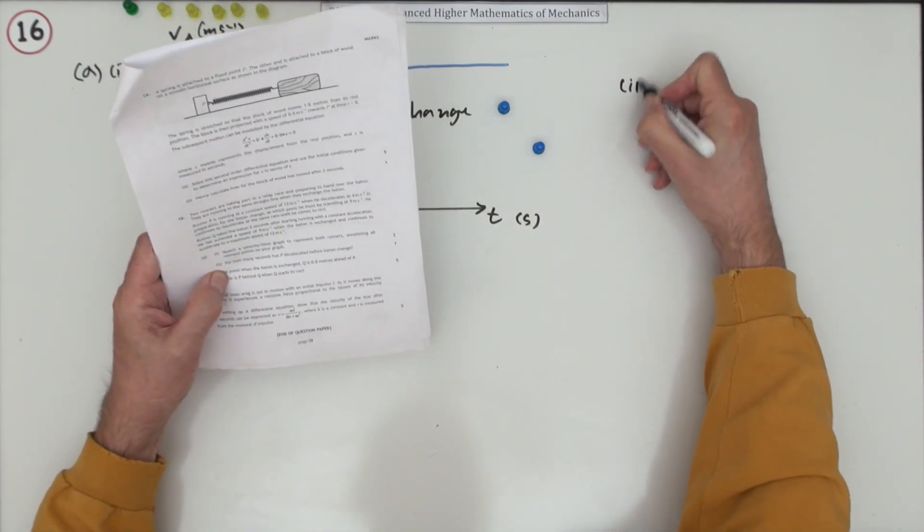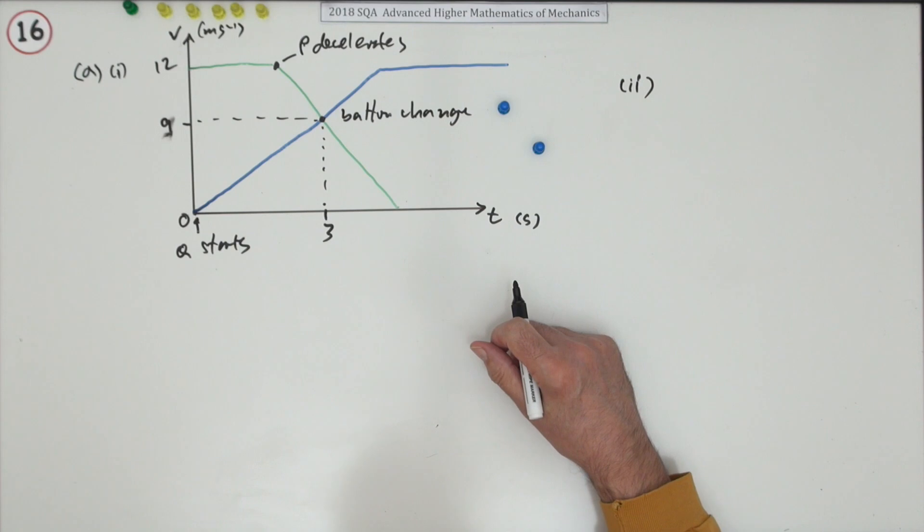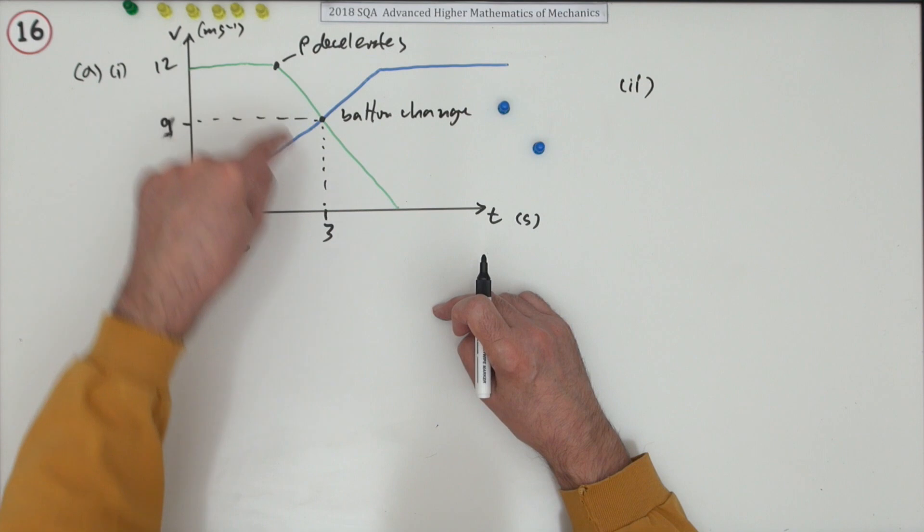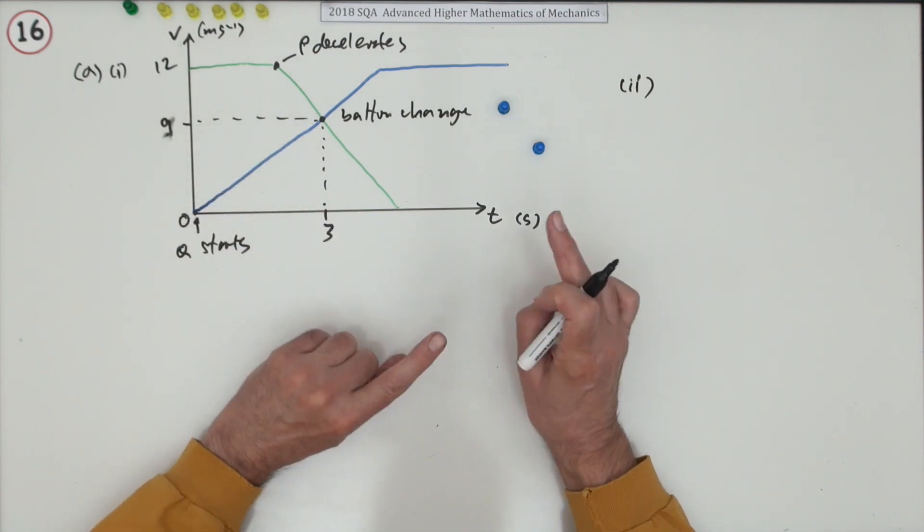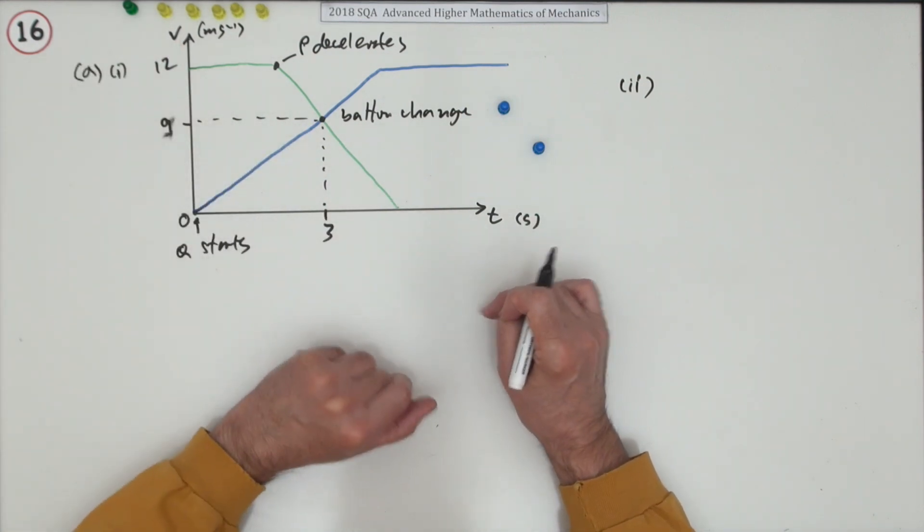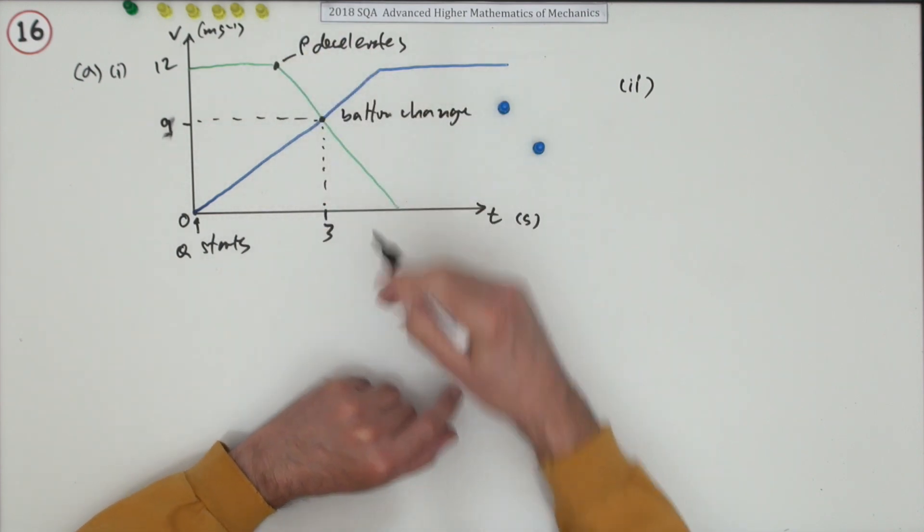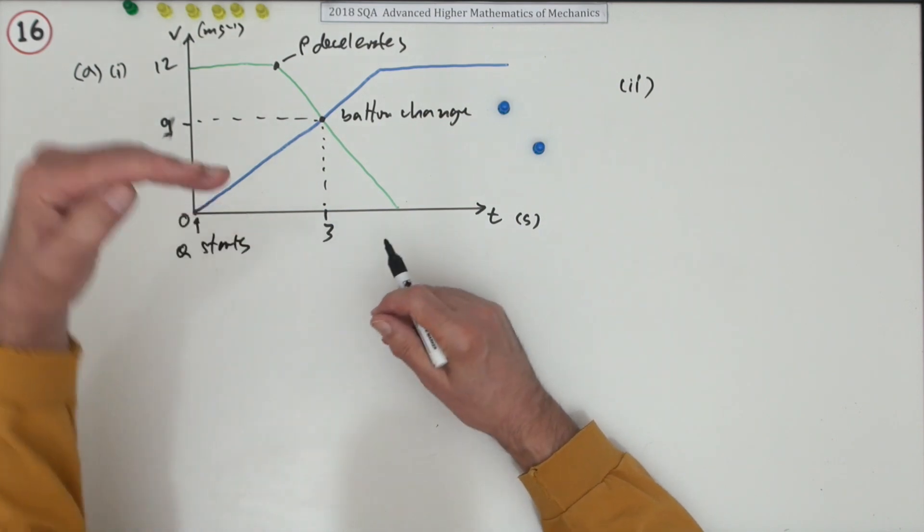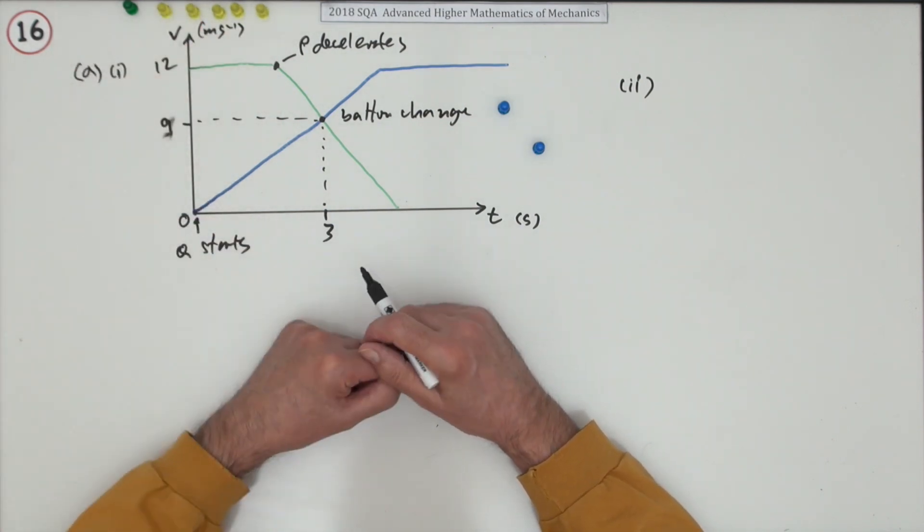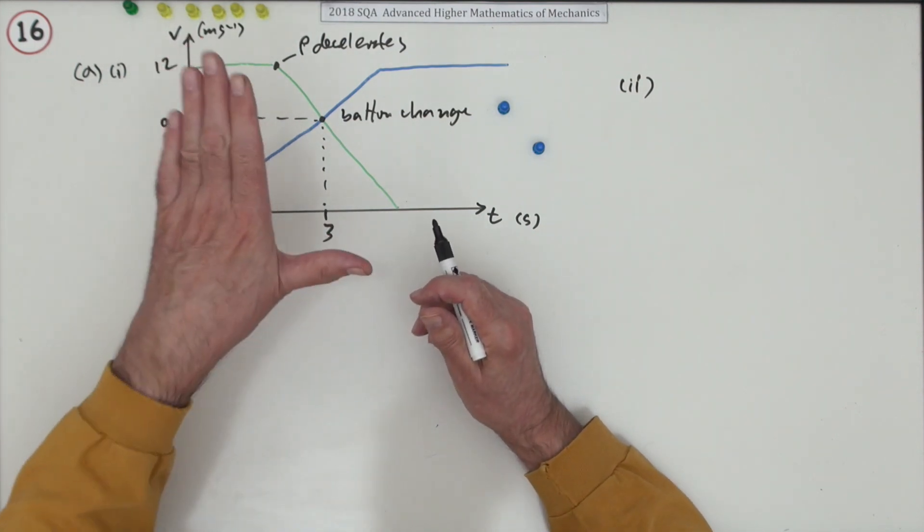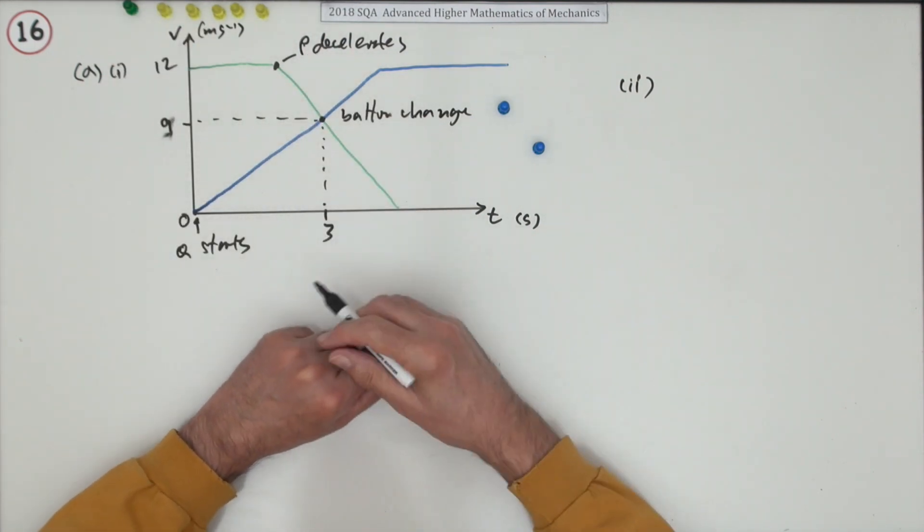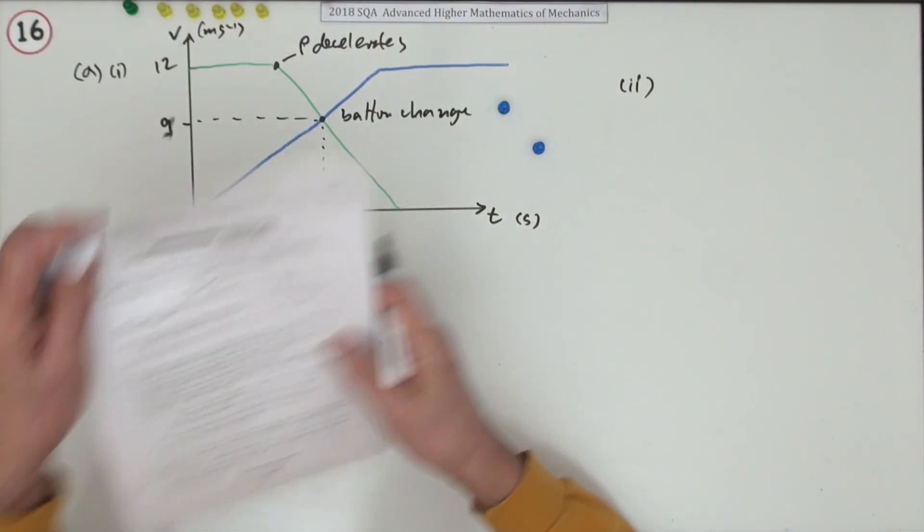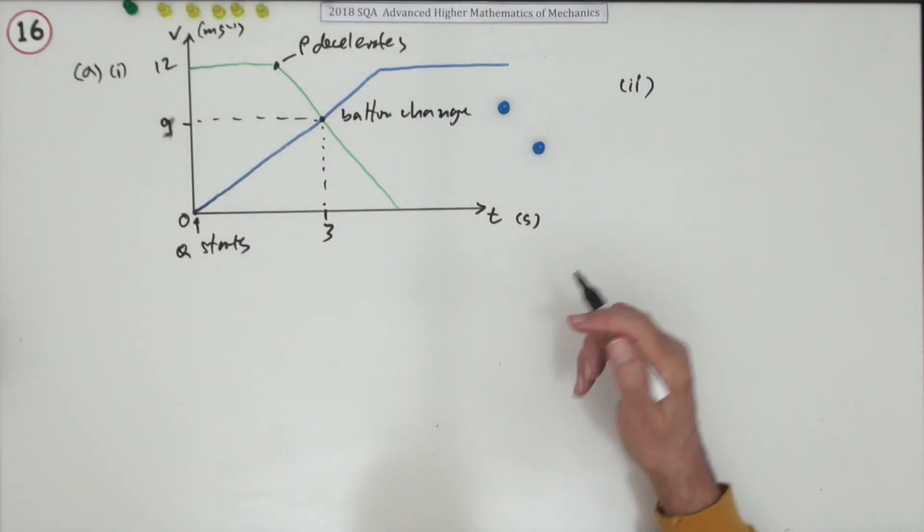Part B. For how many seconds has P decelerated. Now the handy thing about a velocity time graph is the distance travelled is the area under the graph. But another thing to realise is those aren't the actual paths followed by the runners.